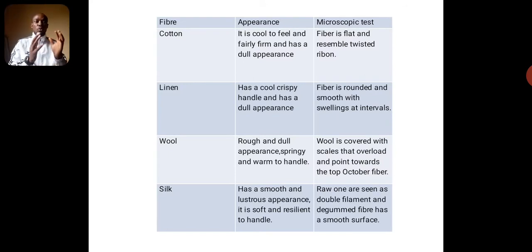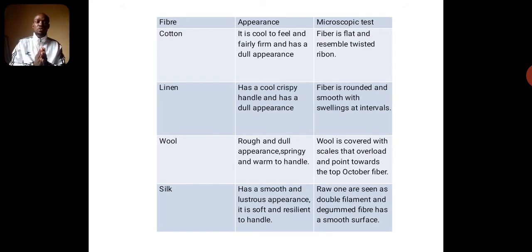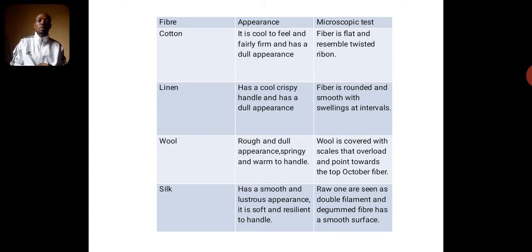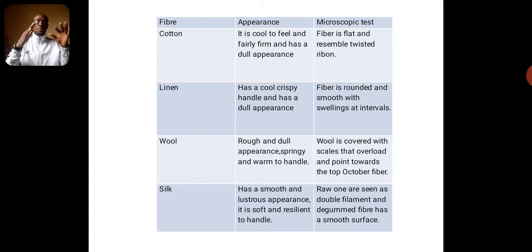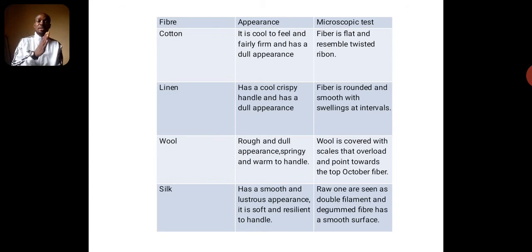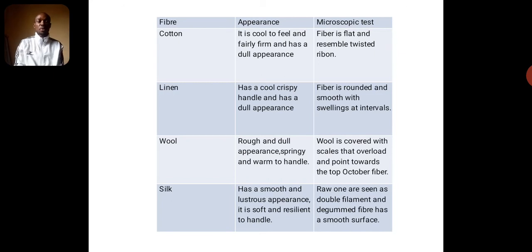Now we want to compare fibers in these two identifications — appearance and microscopic — in tabular form. We will write down the fibers accordingly and note the appearances and how they look when viewed under a microscope, starting from the first one, which is cotton.